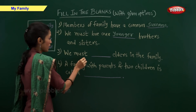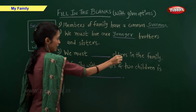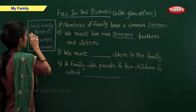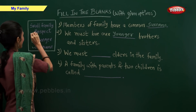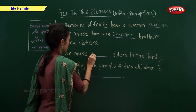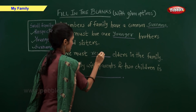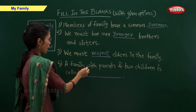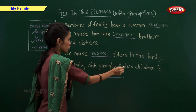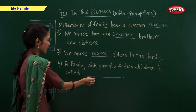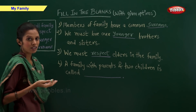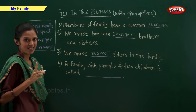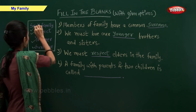We must — elders in the family. The correct answer is: respect. A family with parents and two children is called —. The correct answer is: small family.